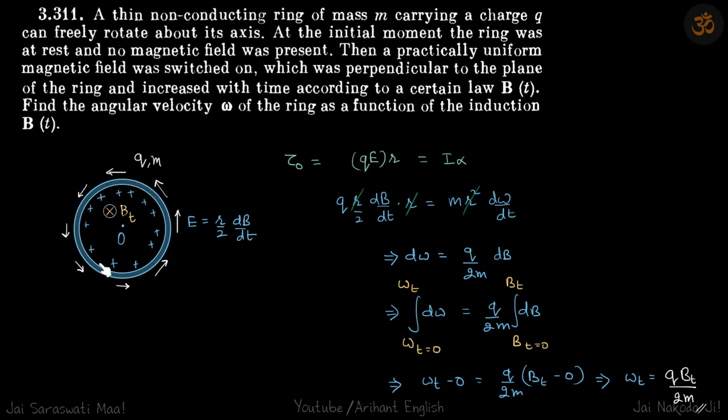We can see here from the diagram that all the charged particles are experiencing the torque qE times r. So torque equals Iα. E can be written as (r/2)(dB/dt), where r is the radius of this ring.